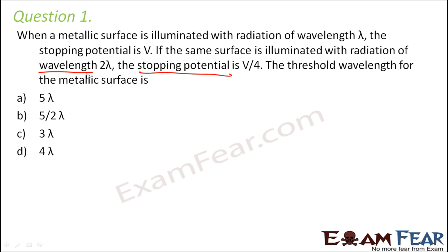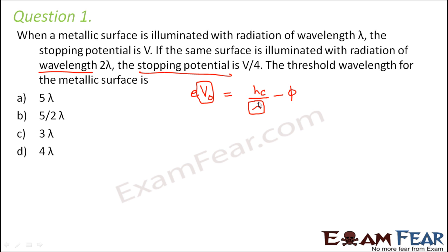The photoelectric equation in terms of stopping potential is: eV₀ = maximum kinetic energy = HC/λ − φ, where V₀ is the stopping potential and λ is the wavelength.